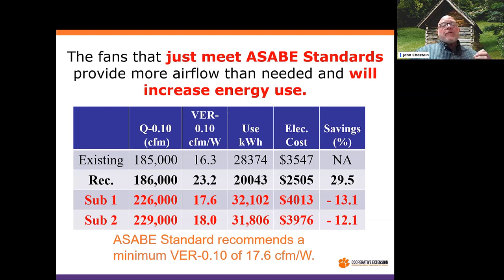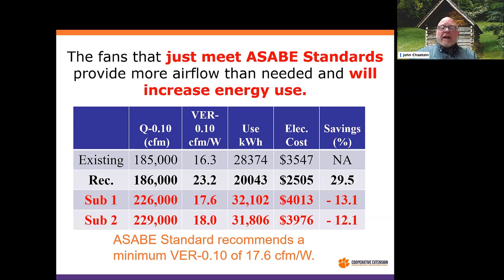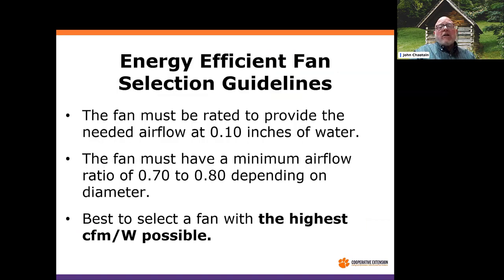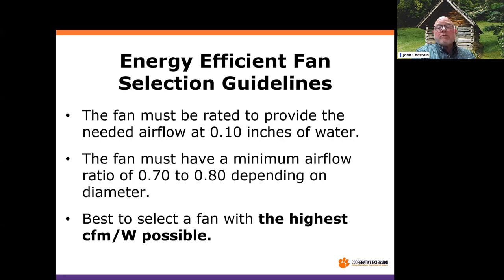One caveat: if a facility needs to increase airflow to meet certain guidelines, we want to do that in the most efficient way possible — and many times the goal is to break even on cost while meeting new ventilation requirements. To summarize the guidelines for fan selection: fans must be built well for ag environments; they must provide the required airflow at one-tenth of an inch static pressure; they must meet minimum airflow ratio requirements — 0.7 to 0.8 depending on diameter; and you want the highest CFM per watt you can get, because that will keep saving money for the life of the fan.